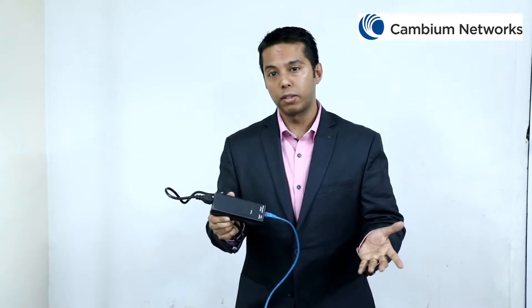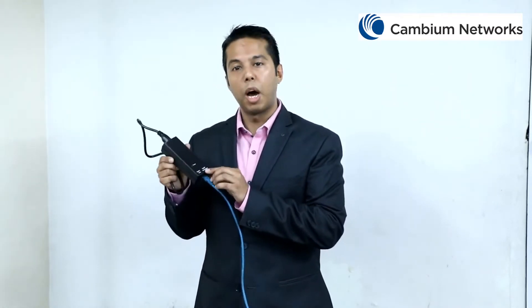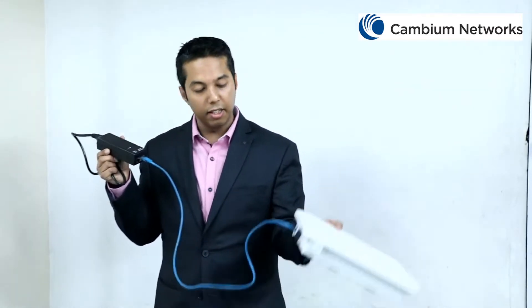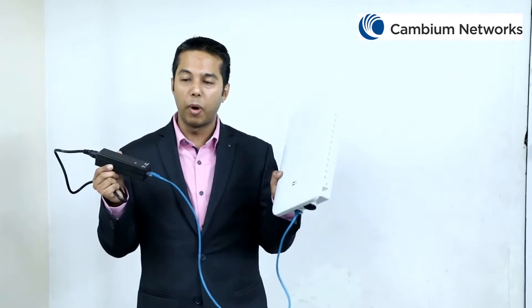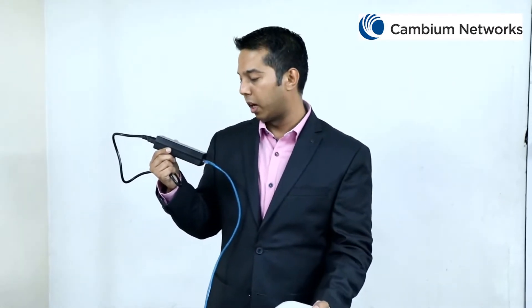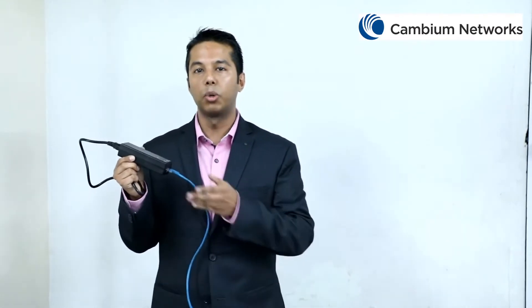This PoE adapter comes with 36 volts or 56 volts specification. The ports are gigabit-capable. The ports marked with data plus power should go to Ethernet port 1 of this access point, and the ports marked with gigabit data should go to the layer 2 or layer 3 switch.